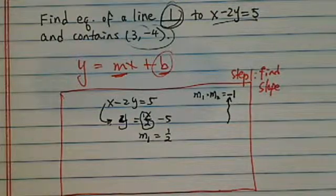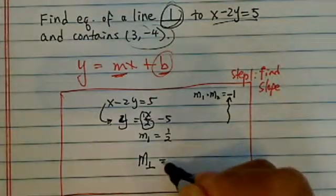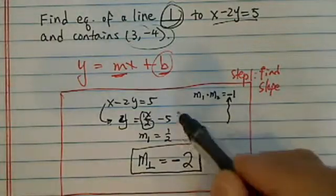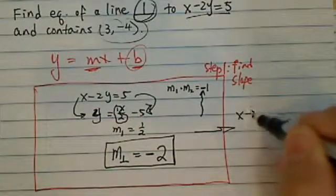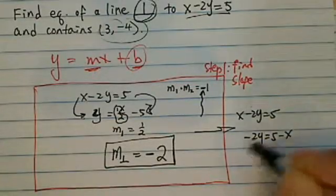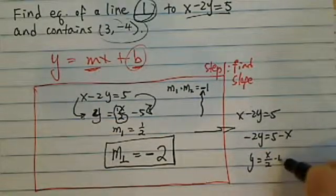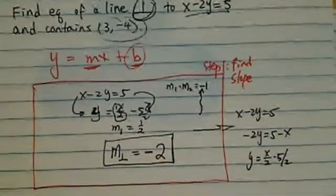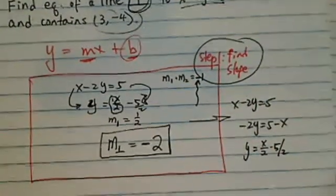If m1 is one half, then m2 — the slope of the perpendicular line — is equal to the negative reciprocal, which is negative 2. If you don't see how I got there, here's the side work: starting from x minus 2y equals 5, we get negative 2y equals 5 minus x, then divide by negative 2 to get y equals x over 2 minus 5 over 2. Once you get this slope, you want to find the slope of the line you're looking for — that's step one done.